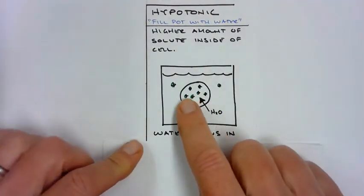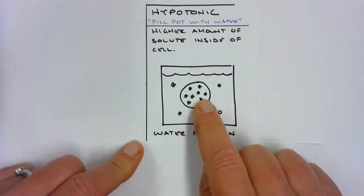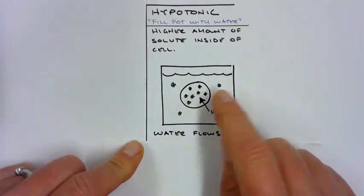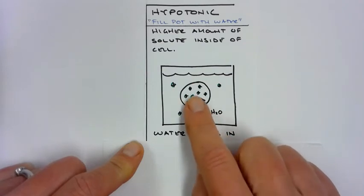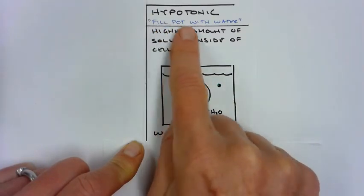So in this scenario, you can see the solute is much higher inside of the cell compared to outside of the cell, so water wants to even that ratio out, so water is going to flow in. That's why we fill the pot with water.